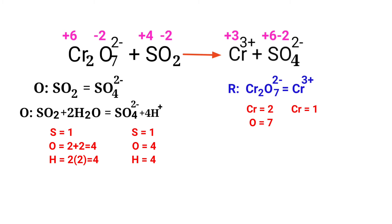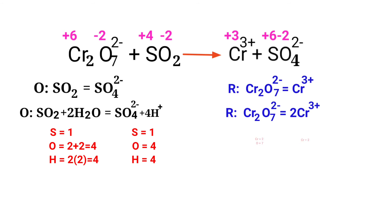Now balance the number of atoms in the reduction half-reaction. To balance the chromium atoms, we need to put a coefficient of 2 in front of Cr³⁺. The chromium atoms are now balanced. Next, to balance the oxygen atoms, we can produce water molecules.